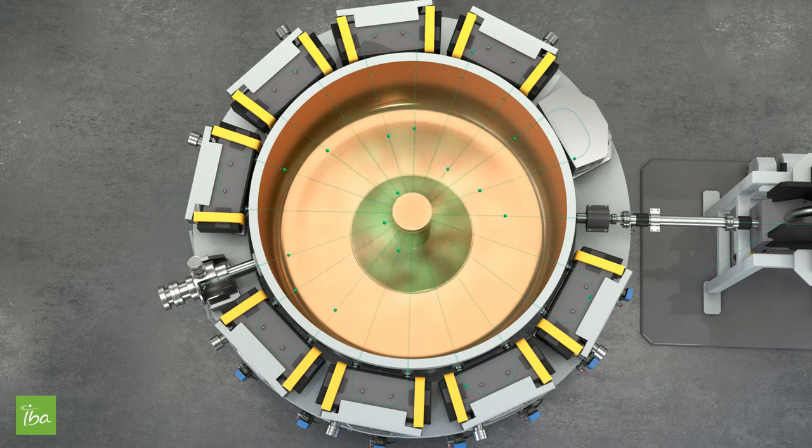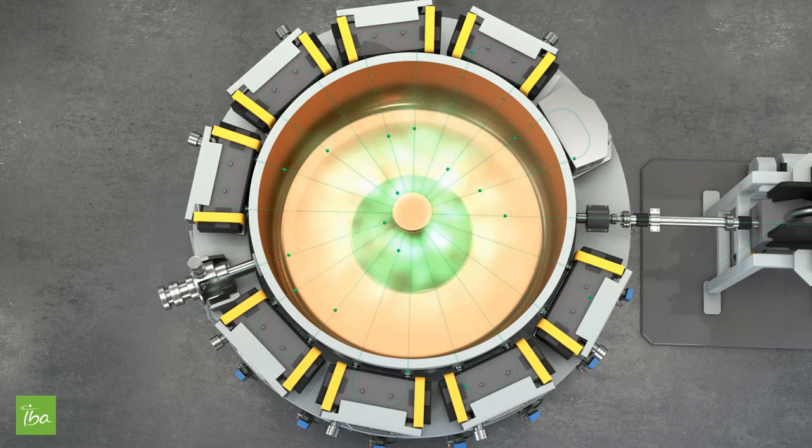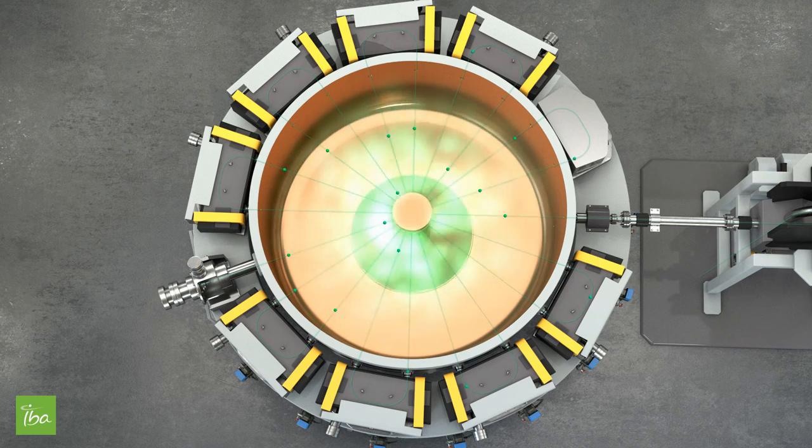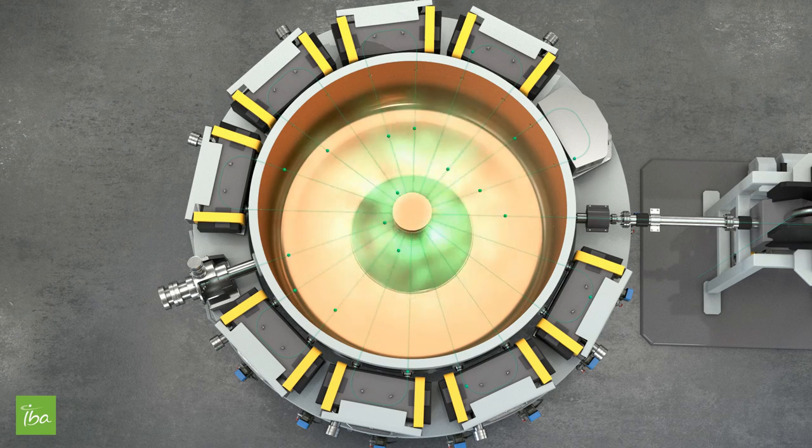After passing through the magnets where they are bent, the electrons are sent back through the cavity. At each pass, they are accelerated by a fraction of the final energy required. When reaching the final energy, the electrons exit the cavity by following their way straight forward through the beam line.